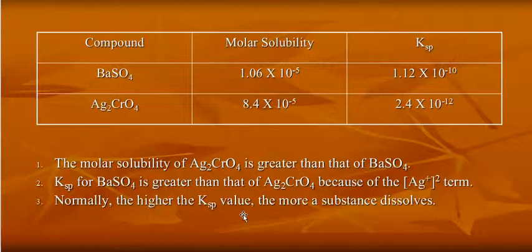So here's a comparison of the two solids, barium sulfate and silver chromate. Silver chromate has a higher solubility, but it has a lower Ksp value, 2.4 times 10 to the negative 12th. Normally, the higher the Ksp value, the more a substance dissolves. So the higher the Ksp, the more ions you get in solution.